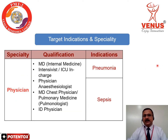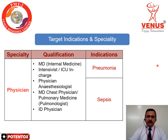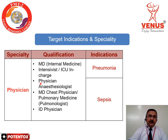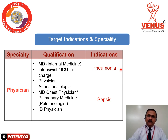The target indications and target specialties for promoting Potent Talks: the first specialty is the physician sector. Doctors in this category include MD internal medicine, intensivist or ICU in-charge physician, anesthesiologist or critical care specialist, MD chest physician or pulmonologist, and infectious disease physicians. The main target indications for the physician category are pneumonia and sepsis.